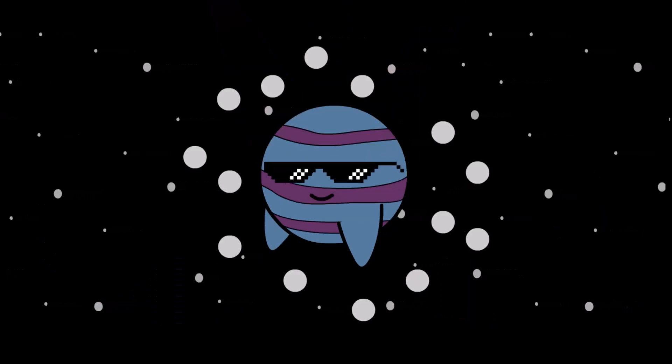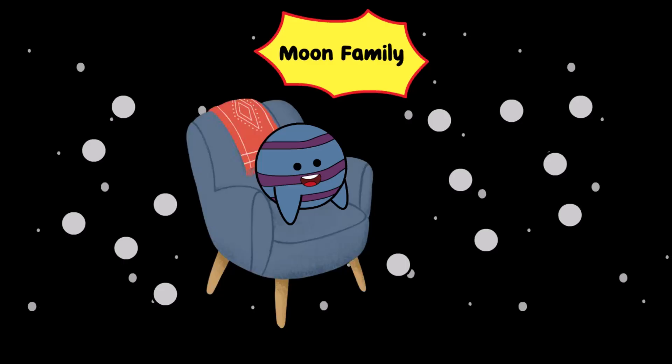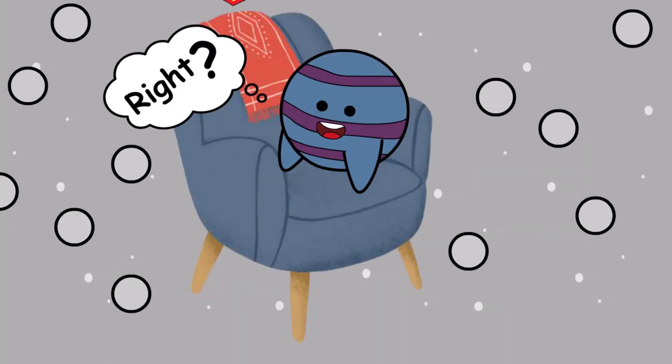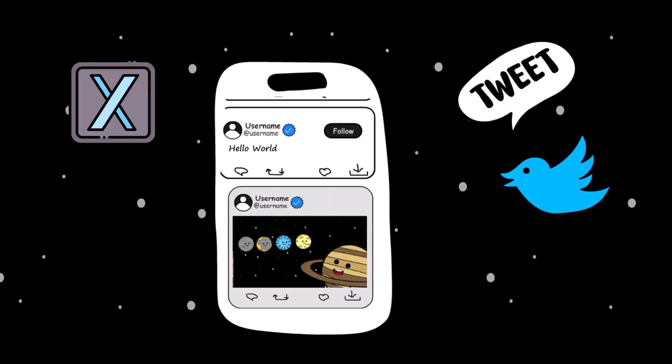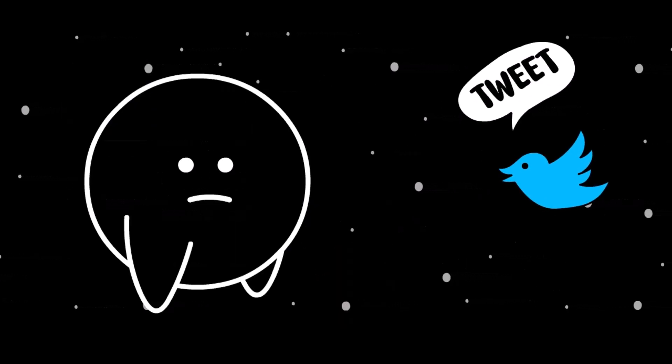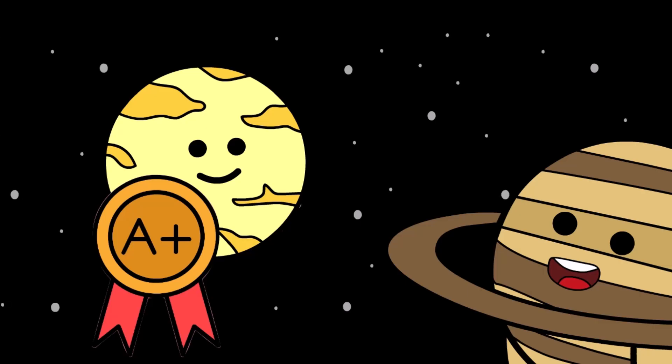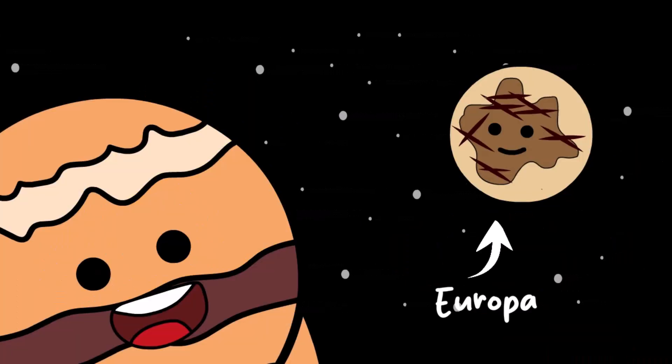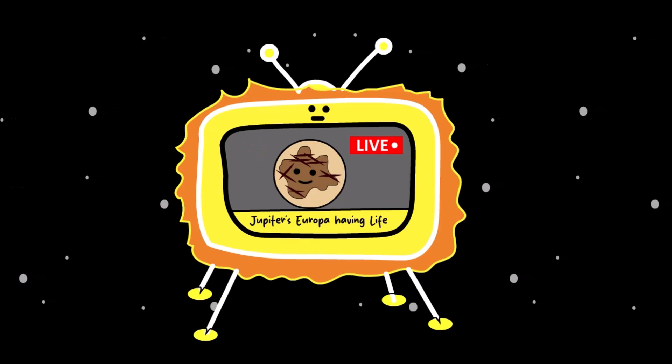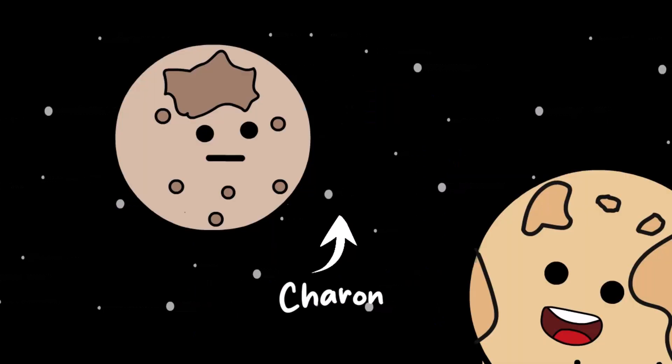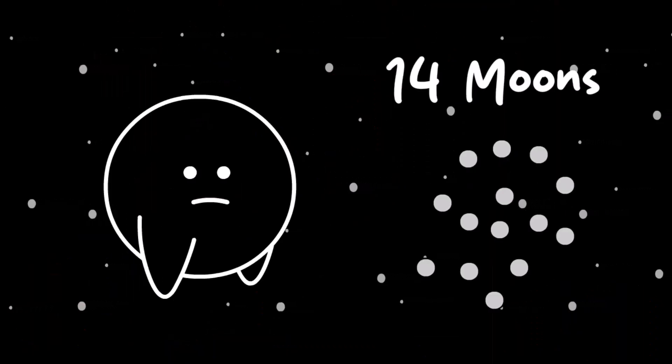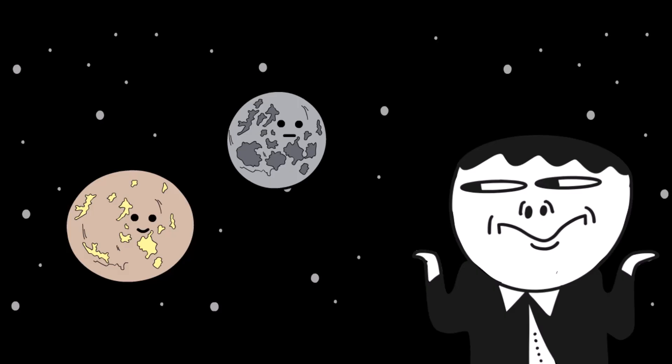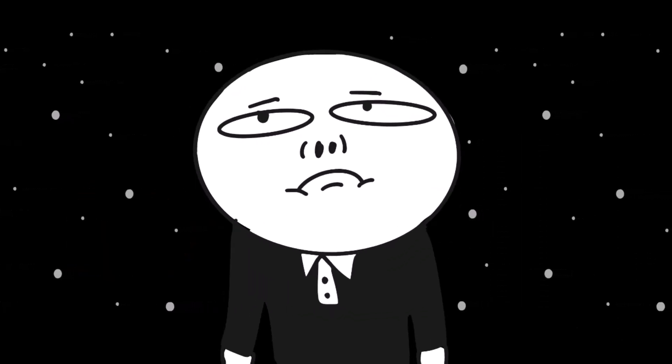Neptune has 14 moons. That's more than enough to build a little moon family, right? But somehow, none of them are famous. Saturn's Titan gets love for possibly having lakes. Jupiter's Europa is always in the headlines for maybe having life. Even Pluto's moon Charon has a fan base. But Neptune's moons barely get mentioned. They're cool, sure, but they're weird too. Super weird.